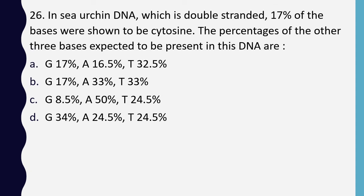Question 26. In sea urchin DNA, which is double stranded, 17% of bases were shown to be cytosine. The correct option is option B: guanine would be 17%, adenine would be 33%, and thymine would be 33%.